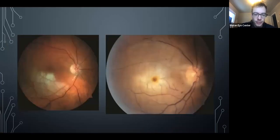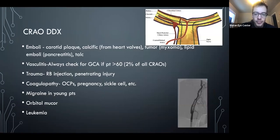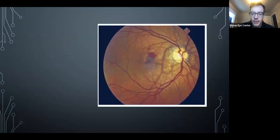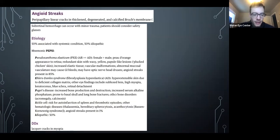Retinal ischemia: you can recognize it by retinal whitening in a vascular distribution, distinguishing it from infectious causes. Work up for emboli. Don't forget GCA in patients over 60 (some say 50). Angioid streaks: pseudoxanthoma elasticum is the most common and important association — get an echocardiogram because of associated cardiac findings. The most common cause of vision loss is secondary CNV because Bruch's membrane is damaged.